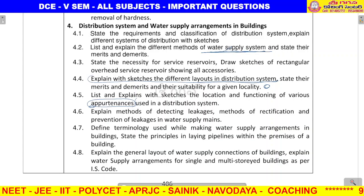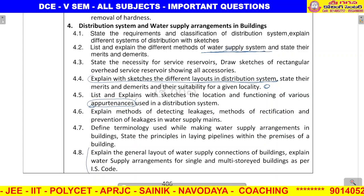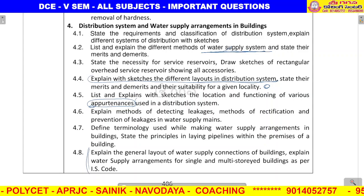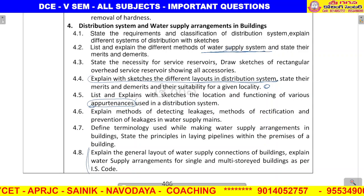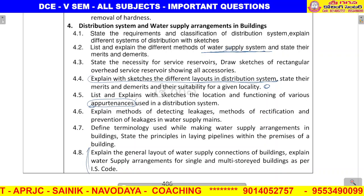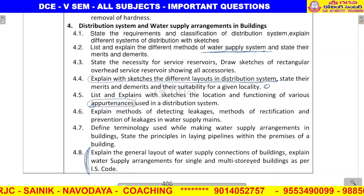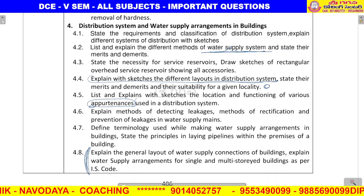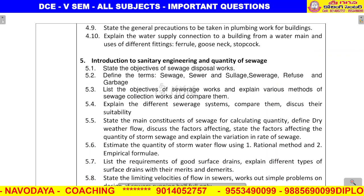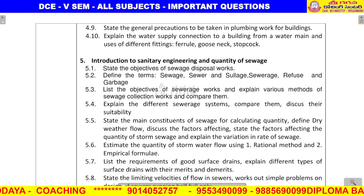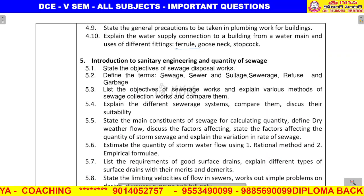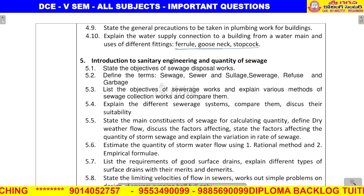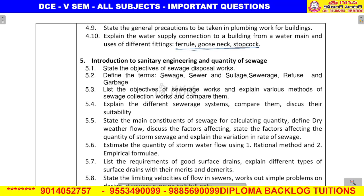General layout of water supply connections for single and multi-storied buildings with diagrams — water supply important. Ferrule and gooseneck — water supply fittings — three marks.